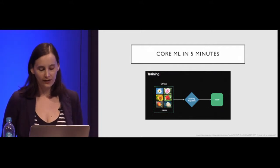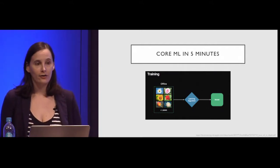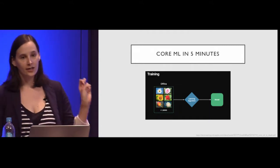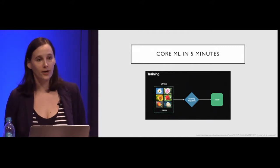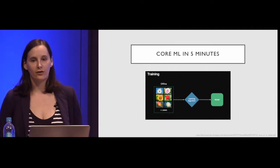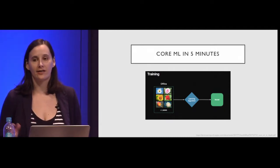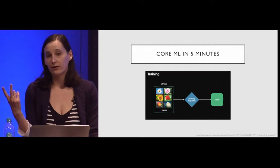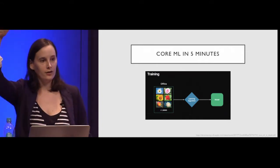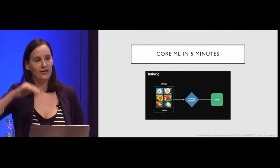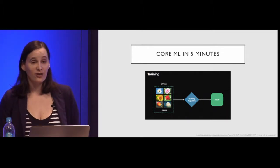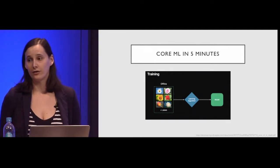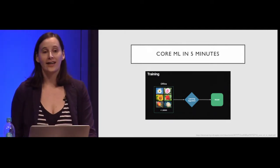You get all your data, run it through your learning algorithm, and when you decide your model is good enough, that becomes your finished model. Depending on what kind of model you're building — a linear model, a neural network — you can have very few parameters, like two for a linear regression, or millions of parameters for a neural network. Even after learning, your finished product can be enormous.